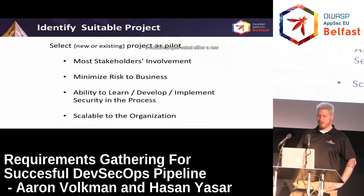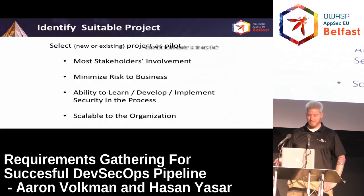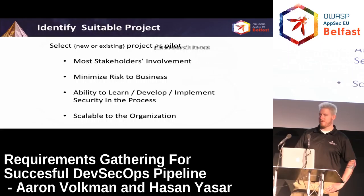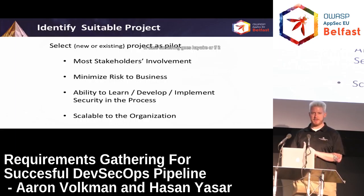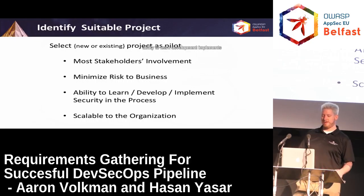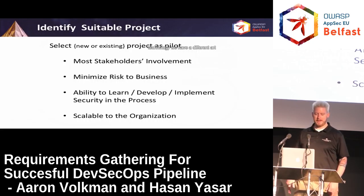Next step is identifying a suitable project — select either a new or an existing project as a pilot. New ones are much easier since they're greenfield. Good pilot projects are ones with the most stakeholders involved so we have a large surface area of people with a stake in the game, ones that minimize risk to the business in case something goes haywire or slows down in release, and ones where we have the ability to learn, develop, and implement security in the process. We want to take aspects out of this pilot and see what can be scaled to the rest of the organization — and as we know, within a single organization, DevOps in one team may look a little bit different from DevOps in another.